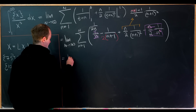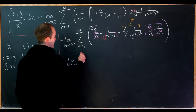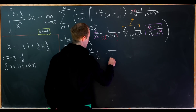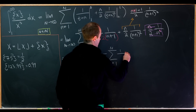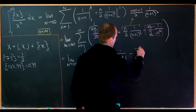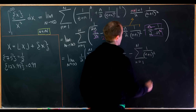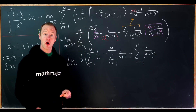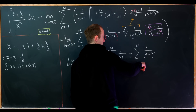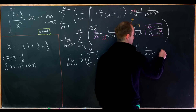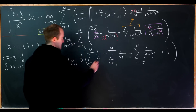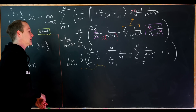Bringing everything together, we factor out 1/2 and are left with the limit as N goes to infinity of 1/2 times: the sum from n=1 to N of 1/(n+1), minus the sum from n=1 to N of 1/(n+1) squared. The first sum is almost the sum of reciprocals of natural numbers — it's just missing the 1/1 term. So we re-index to start at n=0, but that means we've subtracted 1, so we add 1 back. We observe that these two sums almost cancel after re-indexing.